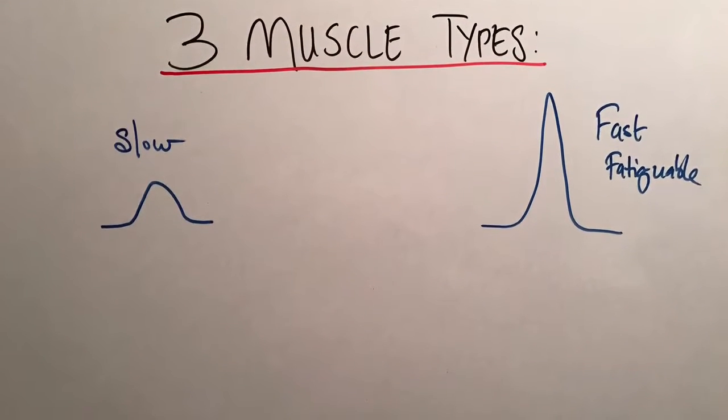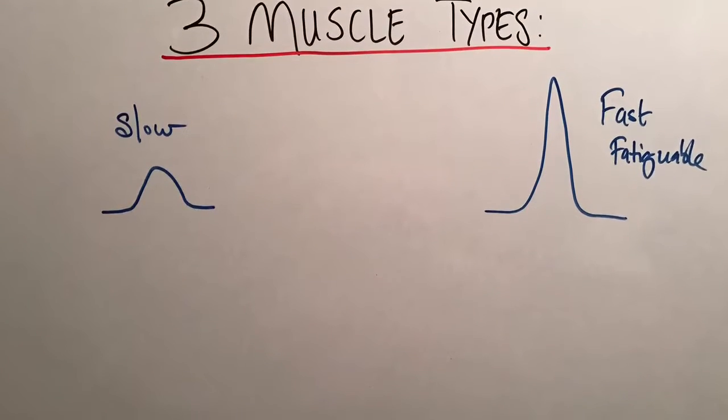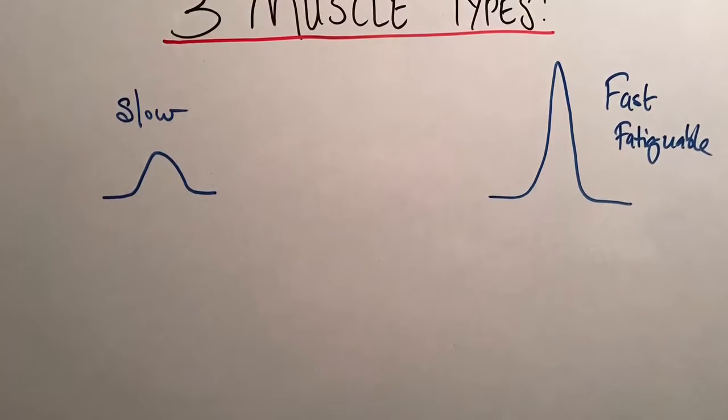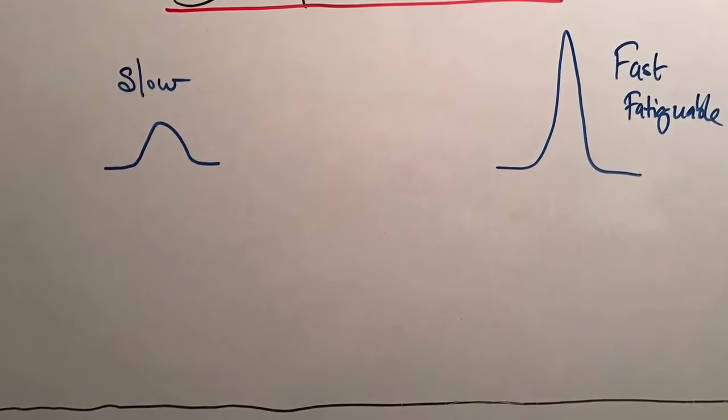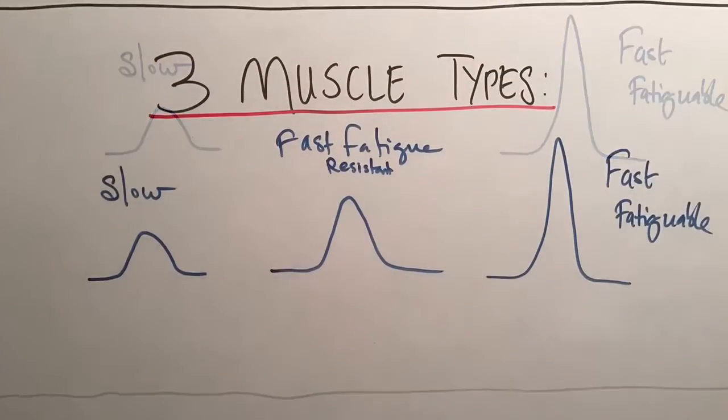There are actually three broad muscle types: the ones with the slow muscle fibers, fast fatigable fibers, and fast fatigue resistant fibers.